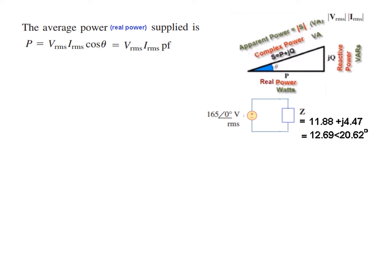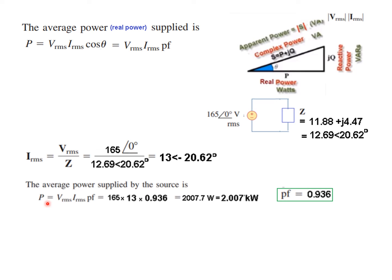Next is the power, average power. Same formula. This is the circuit, this is the V_rms. So first of all we'll calculate I_rms. So I_rms = 13∠-20.62°. And the average power, or the real power: V_rms times I_rms times power factor. Putting the magnitude value only and the power factor, the answer is 2.007 kilowatts.